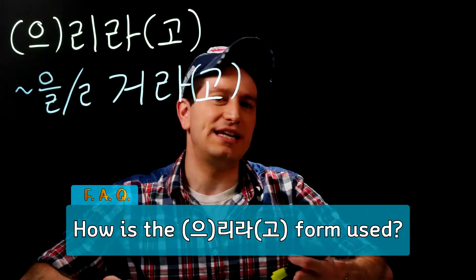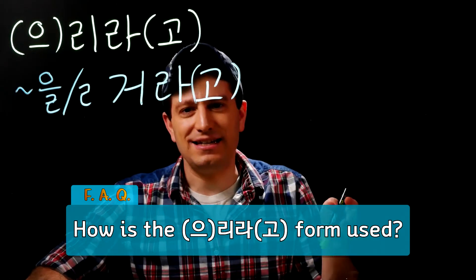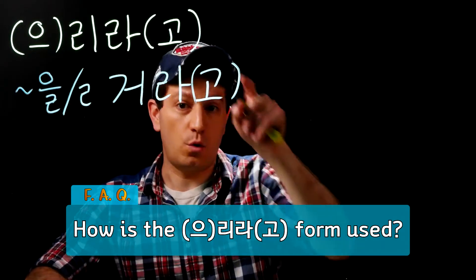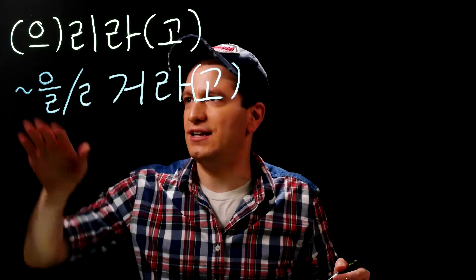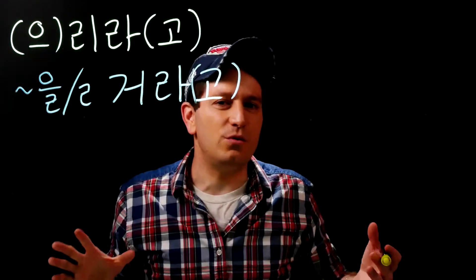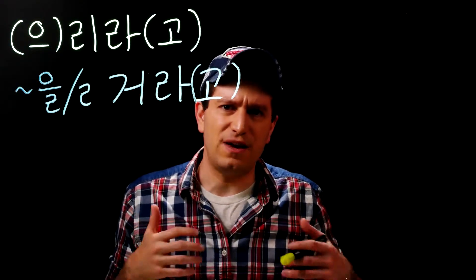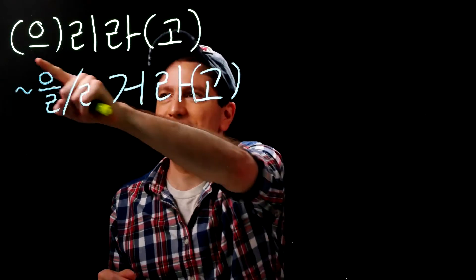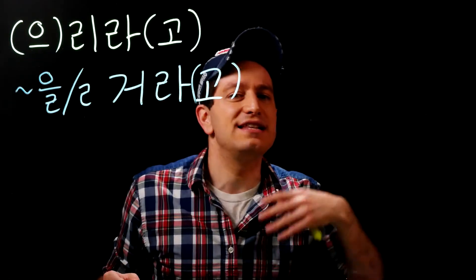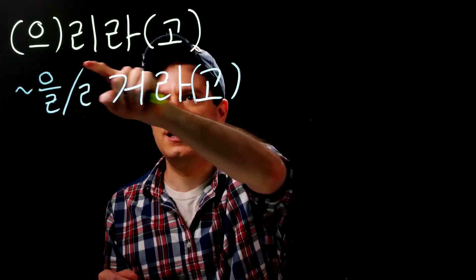Today's lesson is for intermediate-level learners, and that is the grammar form 을이라고, or you might just see this abbreviated as 을이라. The way that it works is as you would expect: if a verb stem ends in a consonant, you're going to attach 을이라고, and if it ends in a vowel, you're just going to attach 이라고.